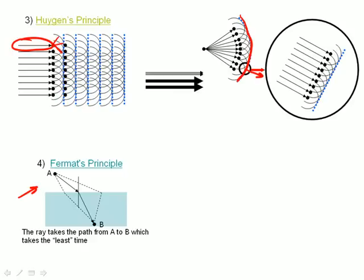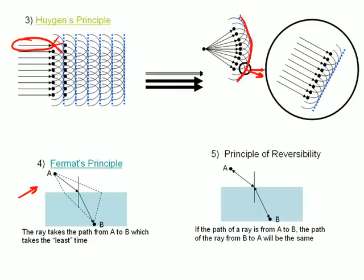A corollary of Fermat's Principle is the principle of reversibility. If light goes from point A to point B, it will take the least time. And in converse, any light that goes from point B to point A will follow exactly the same path, because it is also the least amount of time. This means that whether light goes through an optical system from front to back or back to front, the path the rays will take are exactly the same.